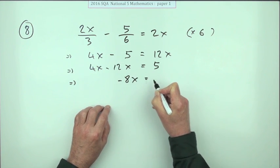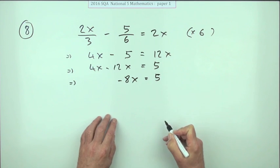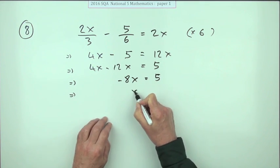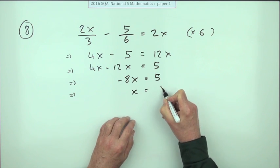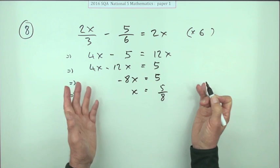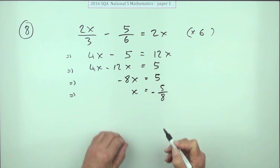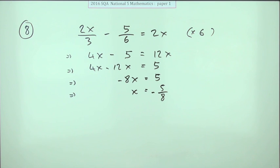And finally, take that across and divide, and that'll be five upon eight, which doesn't simplify. So x is negative five-eighths.